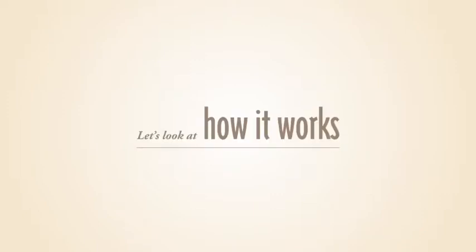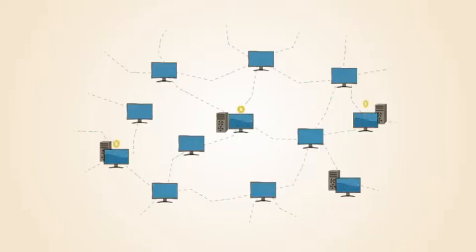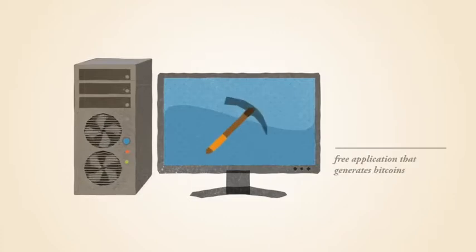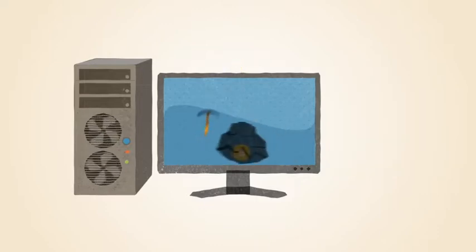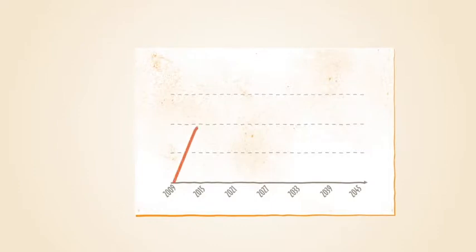Let's look at how it works. Bitcoins are generated all over the Internet by anybody running a free application called a Bitcoin miner. Mining requires a certain amount of work for each block of coins. This amount is automatically adjusted by the network such that Bitcoins are always created at a predictable and limited rate.